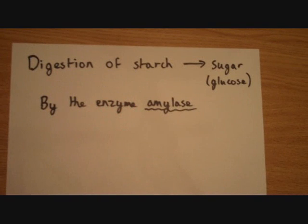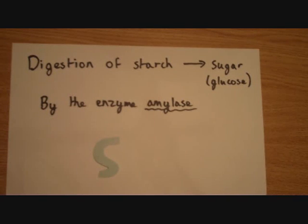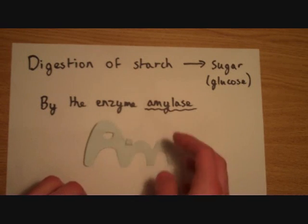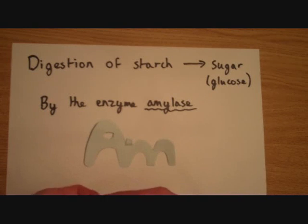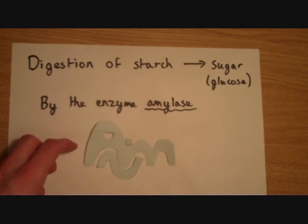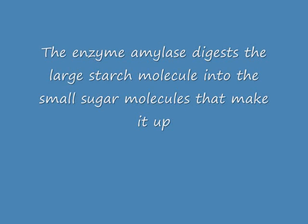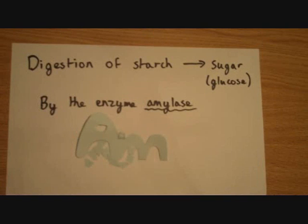Last, but by no means least, is the digestion of starch, given by the letter S, that is broken down into the molecules of sugar that make it up. Now this happens with the enzyme amylase, given by the letters AM. Here we can see the starch again fits into the active site and is broken down into the sugar subunits. These sugar molecules are so small that they are easily absorbed by our bloodstream once we have digested starch in our gut.